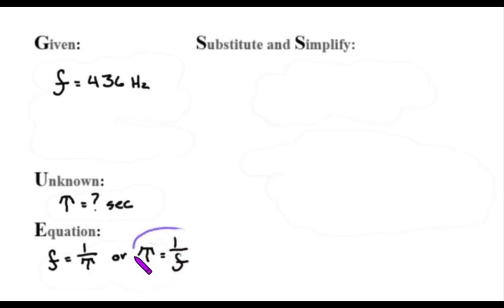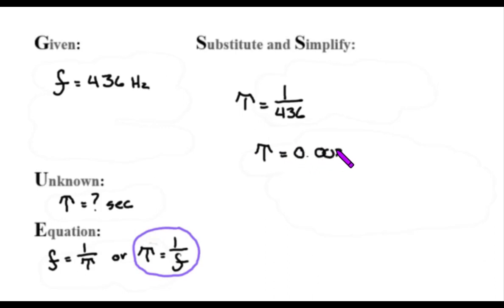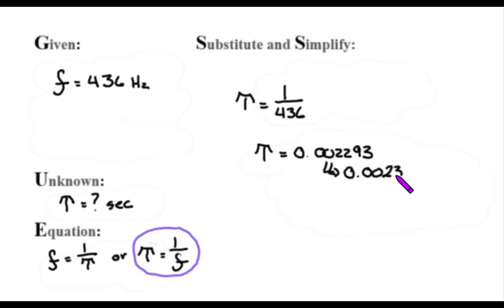I'm going to use period equals 1 over frequency — it's most straightforward. So I find that period equals 1 over 436 Hertz. Period equals 0.002293, and then just for ease in class, let's call it 0.0023 seconds.